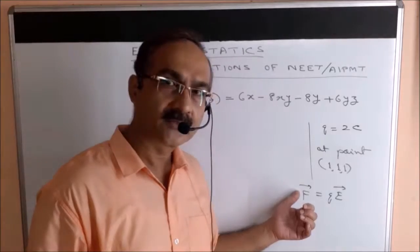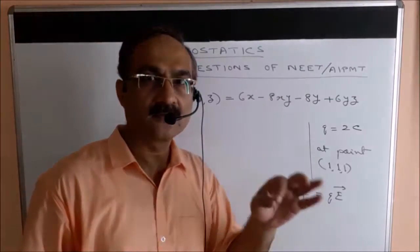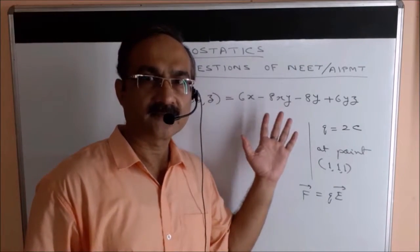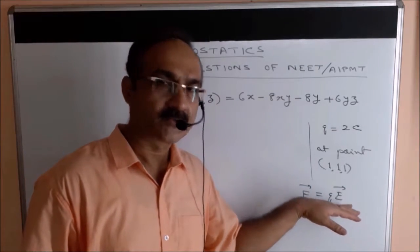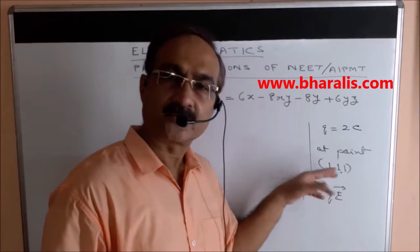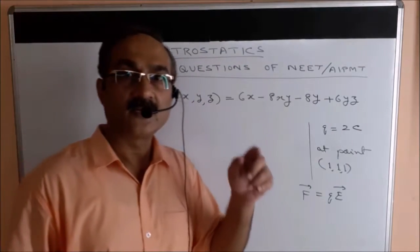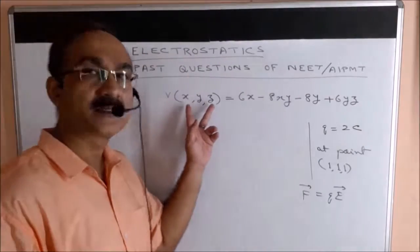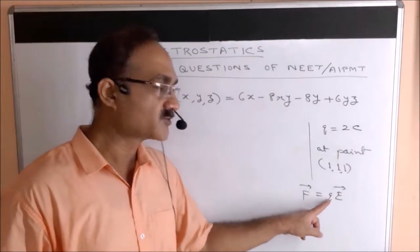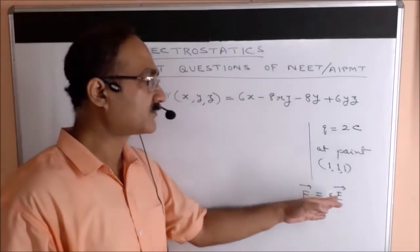Coulomb's law and F = QE are the only two formulas that give us the force on a charge. Since Coulomb's law cannot be applied here, we must use F = QE. That means we first need to find the electric field at this point, which we can do using formula number 5: E = −dV/dr. Since potential is given, we find the electric field first, then multiply by the charge to get the force.